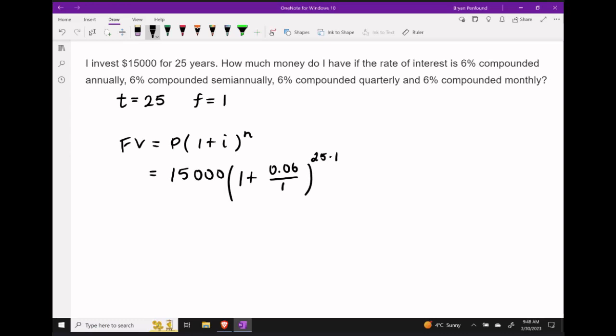This means our future value should be given by 15,000 times 1 plus 6% divided by 1, and this bracket is raised to the power of 25 times 1. That's because i is the periodic rate, it's our rate divided by the frequency number, and n, our power, is t times f.